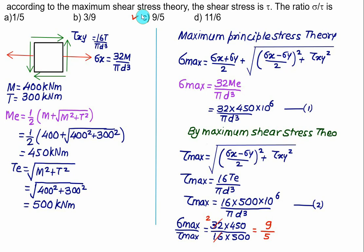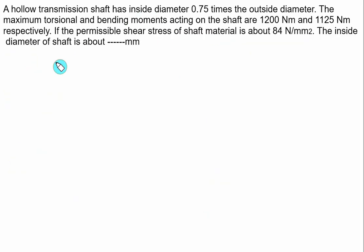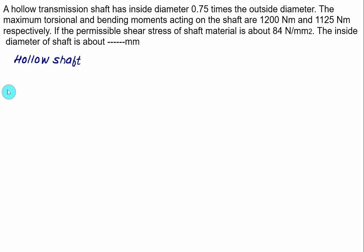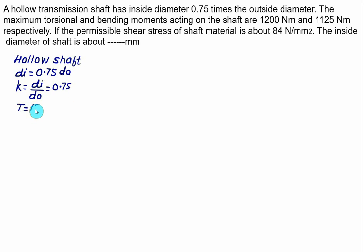9 divided by 5 — Choice C is correct. A hollow transmission shaft has an inside diameter of 0.75 times the outside diameter. The maximum torsional and bending moments are 1200 Nm and 1125 Nm respectively. Permissible shear stress is 84 MPa. We have to find the inside diameter. Here K equals Di divided by Do equals 0.75, torque T equals 1200 Nm, bending moment M equals 1125 Nm, and tau-max equals 84 MPa.